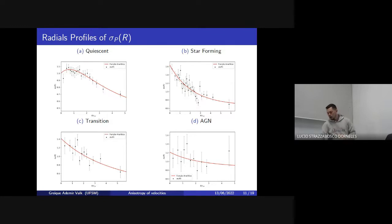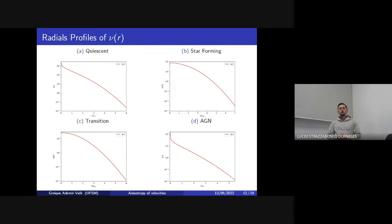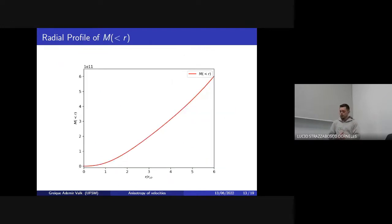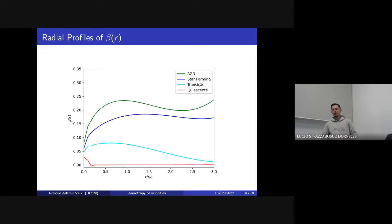Unlike the quiescent population. Using the projected number density profile, we can get the number density profile, shown here for the four populations. We again see that the quiescent population has higher values of number density in almost all areas, unlike the star-forming and transition populations. Using the projected sigma and density profile, we can get the mass profile for the cluster. To obtain this, we need the hypothesis that the quiescent population has isotropic orbits, meaning the beta profile is zero. Using this mass profile, we can get the beta profile for the other three populations, shown here.